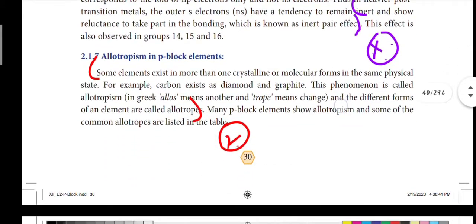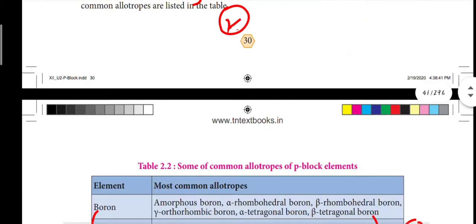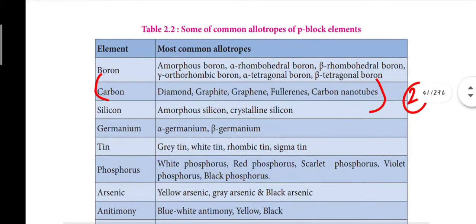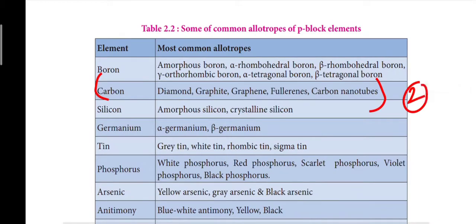Next is allotropism in P block elements, page number 30. Some elements exhibit allotropism. Different structural forms are called allotropes. With specific reference to carbon, the allotropes of carbon are: diamond, graphite, graphene, fullerene, and carbon nanotubes. This is question number 2.